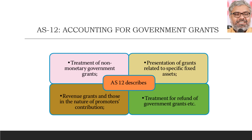What AS12 describes and prescribes: it tells us about treatment of non-monetary government grants, if any. Non-monetary means not in the money form. For example, government gives a particular enterprise land. A lot of times we see in the newspapers that a state government has given or allotted so many acres of land to a particular company. Companies might get certain non-monetary grants from the government; how to treat them will be described and prescribed by AS12.